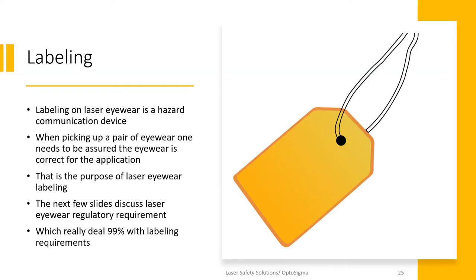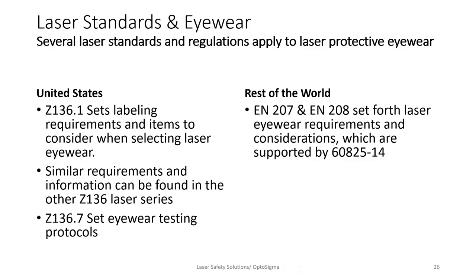Labeling gets a lot of attention from a regulatory perspective and is actually a hazard communication device — eyewear has to be labeled properly. Most findings in laser lab audits that deal with eyewear fall back on labeling. The eyewear standard Z136.1 sets the labeling requirements and items to be considered in selecting eyewear, and this is pretty much repeated in all the laser ANSI standards.